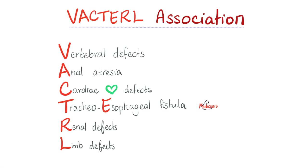Here is how your woke professor would explain it: 'We have the VACTERL Association. You have to memorize and study this. V is Vertebral Defects, A is Anal Atresia, C is Cardiac Defects, T-E is Tracheoesophageal Fistula, R is Renal Defects, and the L, for some reason, is Limb Defects.'